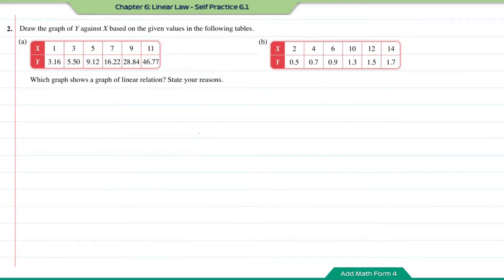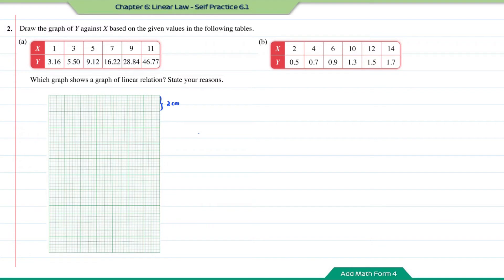Question number 2. Draw the graph of y against x based on the given values in the following tables. Which graph shows a graph of linear relations? State your reasons. We're going to plot graph A first. For the x-axis, I'm going to use 2 cm to 2 units, and for the y-axis, 2 cm to 5 units.